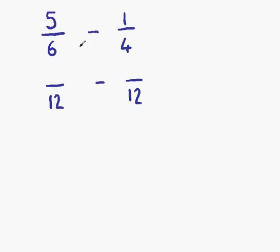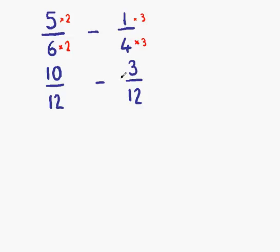We achieve this by multiplying the first fraction by 2, remembering to multiply the numerator by the same amount. And on the second fraction, we must multiply by 3. Multiplying the numerator and denominator by the same amount ensures that the new fraction is equivalent to the one we started with. We have 5 times 2, which is 10, and 3 times 1, which is 3. That gives us 10 twelfths minus 3 twelfths, which leaves us with 7 twelfths.